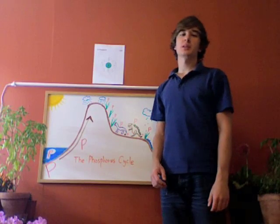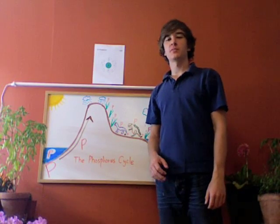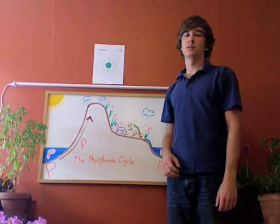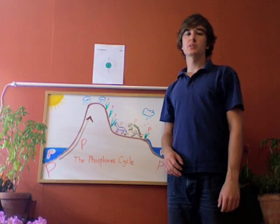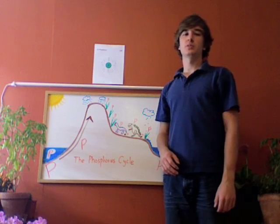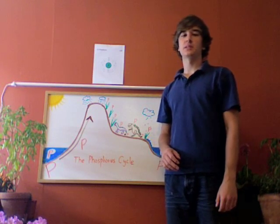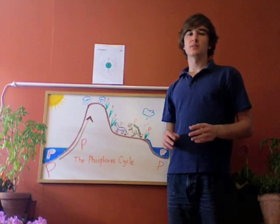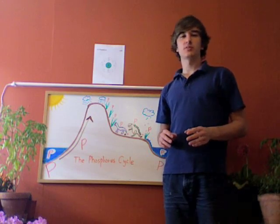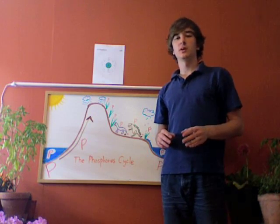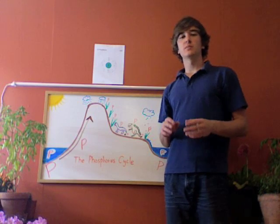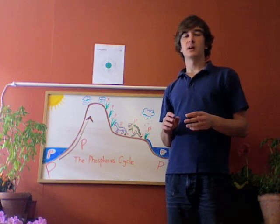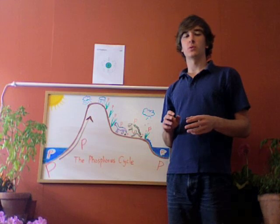Hi, I'm Chris and I want to talk a little bit about phosphorus and the phosphorus cycle. Phosphorus is an element with the symbol P and the atomic number 15. Phosphorus is very reactive so it's never found on earth as a free element. Rather, it's often bound to another element like oxygen to make the phosphate ion PO4.